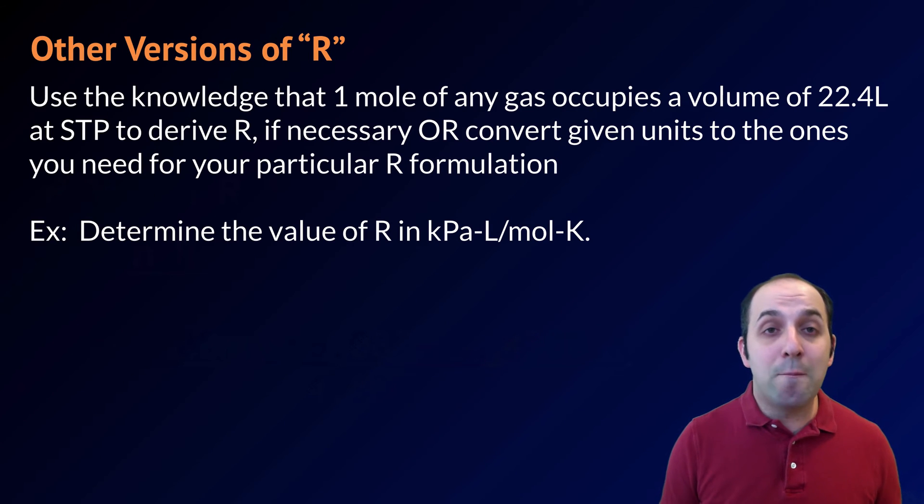We should point out that there are many other versions of the universal gas constant that you can use. Using the knowledge that 1 mole of any gas occupies a volume of 22.4 liters at STP, you could really convert R to have its pressure units in any units of pressure, and have its volume units in any units of volume. Your other option, of course, is simply to take the variables that are given to you in a particular problem and convert them into the units that are given in the R value you want to use, atmospheres, liters, moles, and Kelvin.